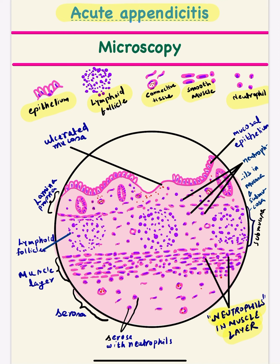After the mucosal lining epithelium, we make the connective tissue in the lamina propria. Connective tissue is made up of fibroblasts and blood vessels. Fibroblasts are spindle-shaped with pointed edges and an elongated nucleus. Then you make blood vessels with RBCs inside. The lamina propria also shows mucosal glands, which are formed when the epithelium dips down into the lamina propria.